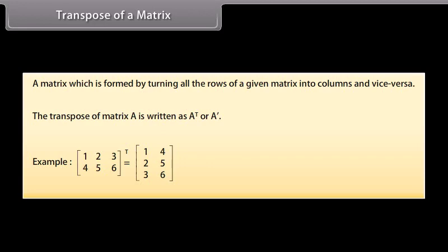Second row: 4, 5, 6 — is matrix row-wise, first row: 1, 4; second row: 2, 5; third row: 3, 6.